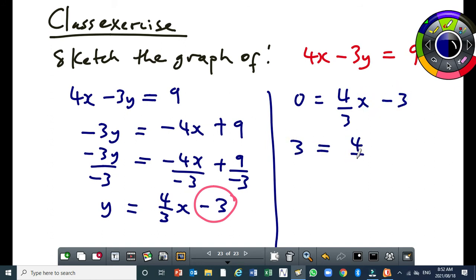You get 3 equal to 4 over 3x. The denominator is 1, then you cross multiply, you get 9 equal to 4x. So x is going to be 9 over 4.